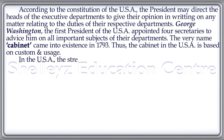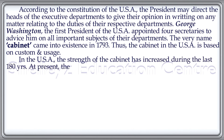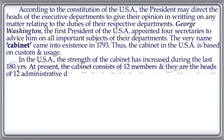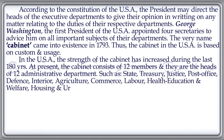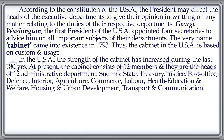The strength of the USA cabinet has increased during the last 180 years. At present, the cabinet consists of 12 members who are the heads of 12 administrative departments: State, Treasury, Justice, Post Office, Defense, Interior, Agriculture, Commerce, Labor, Health Education and Welfare, Housing and Urban Development, and Transport and Communication.